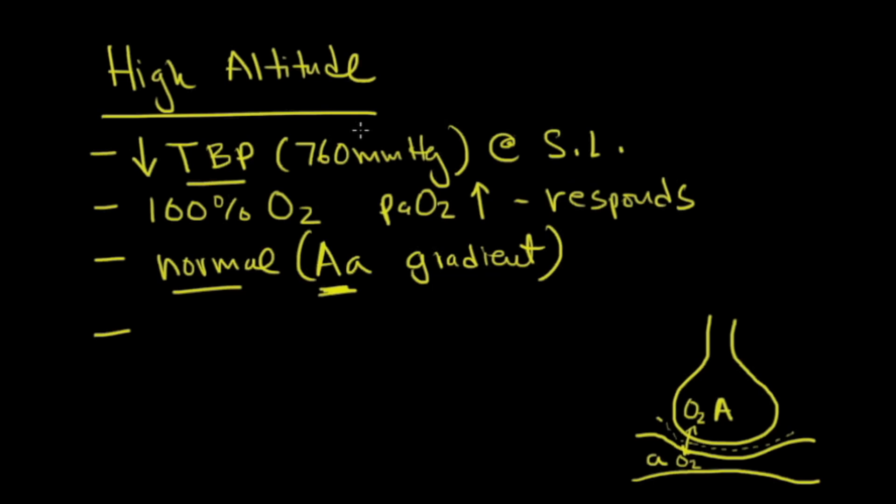So what does the body do in this situation to counteract the low PaO2 in the blood? Hyperventilation. And as a result of that, what we see is the CO2 levels or the PCO2 levels, the partial pressure of carbon dioxide actually goes down. And this allows more room for the PaO2.